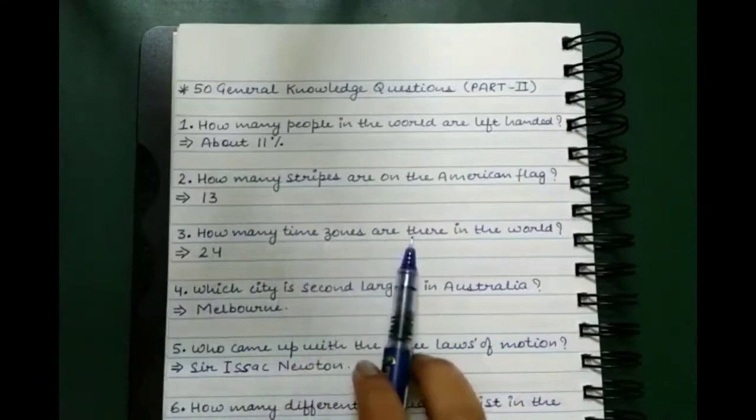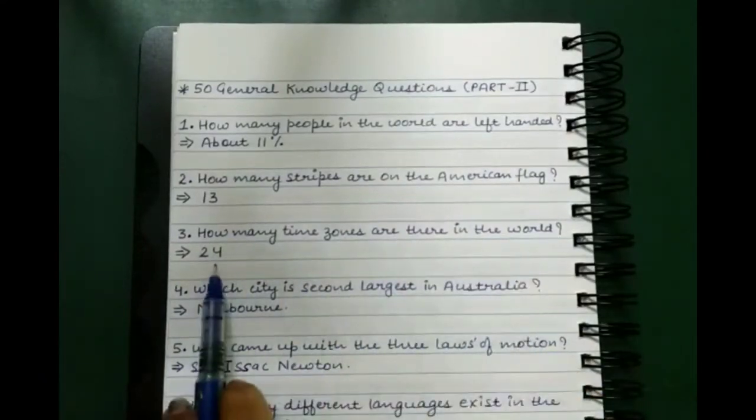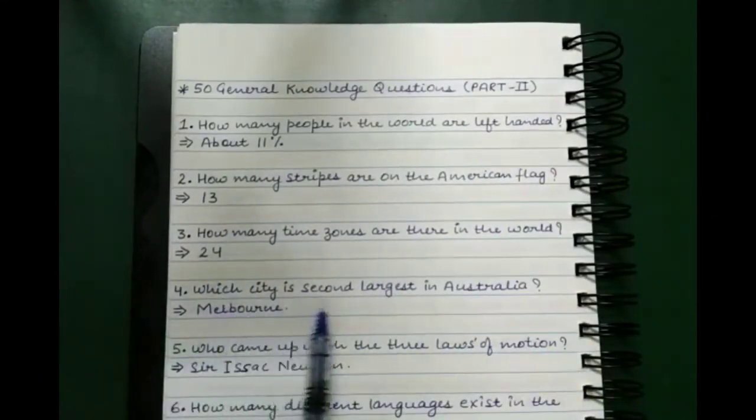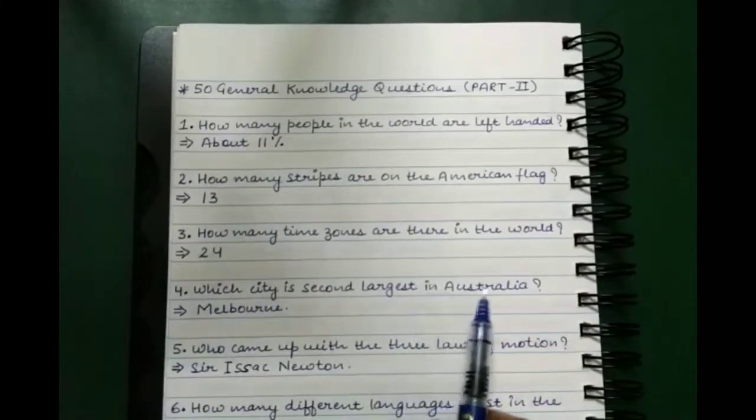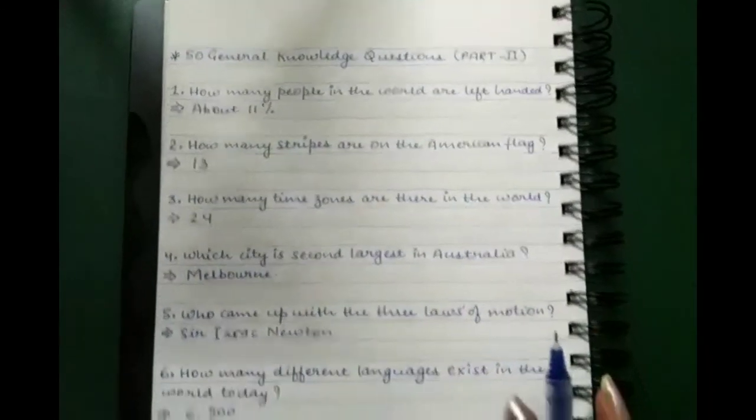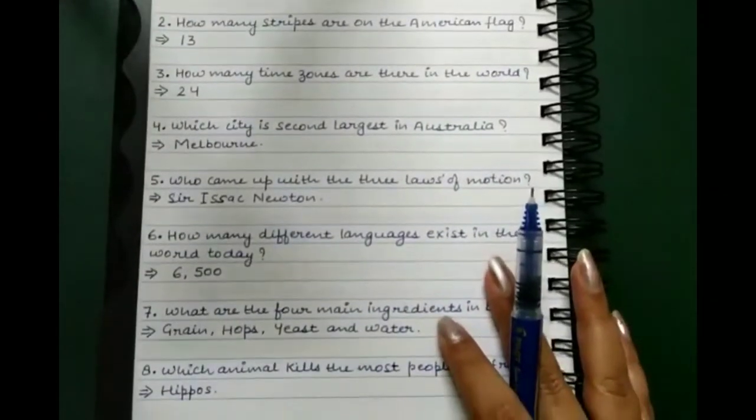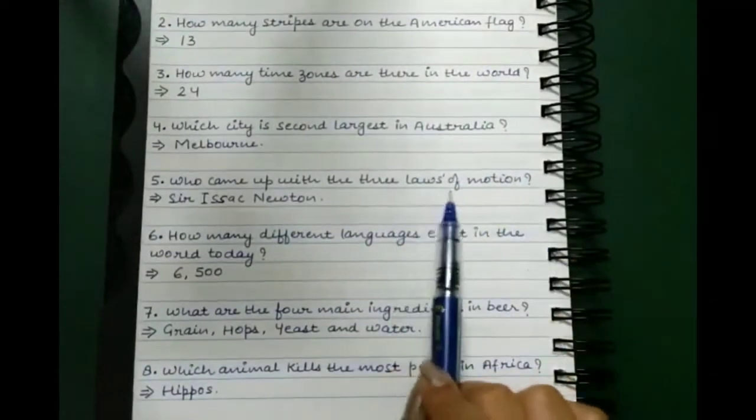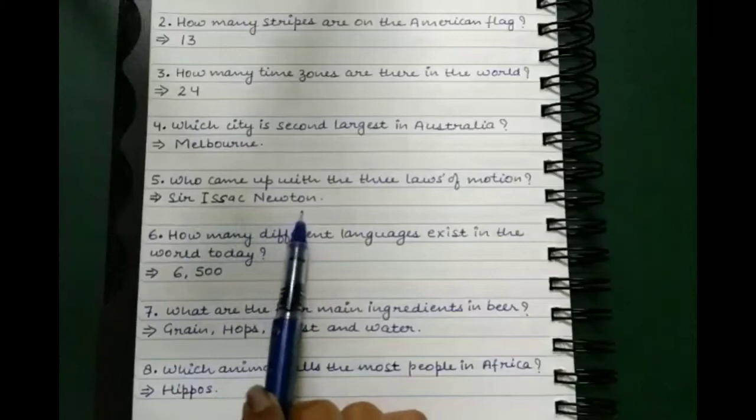How many time zones are there in the world? 24 time zones. Which city is second largest in Australia? Melbourne. Who came up with the three laws of motion? Sir Isaac Newton.